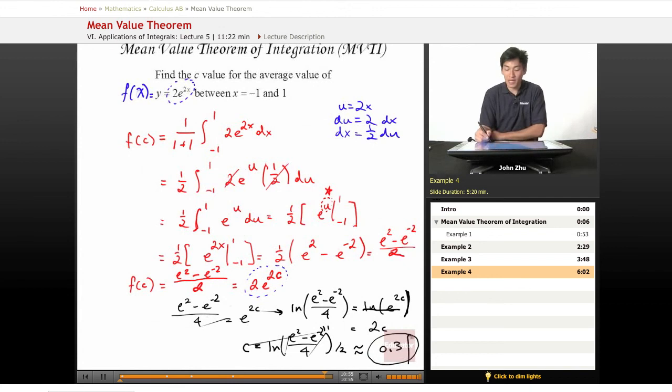So on the AP exam, they will ask you a question that's in this form, finding the c value, or they could simply ask to find the mean value theorem. So either way, we just apply the theorem directly. And if they ask for the c value, we just set it equal to the original expression with c replacing x.